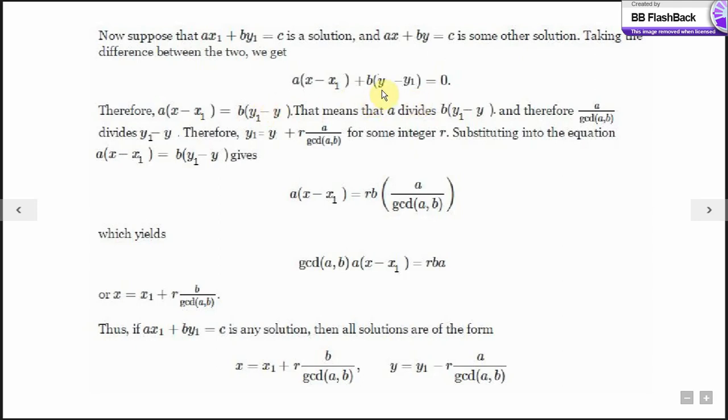Taking the b into y minus y1 on the other side, we get a into x minus x1 equals b into y1 minus y. That means that a divides b into y minus y1, and therefore we can say that a divided by the gcd of a, b divides y minus y1. Solving this equation, y1 gives y plus r into a by gcd of a, b for some integer r. Substituting this into the equation a into x minus x1 equal to b into y1 minus y gives us this, which yields x equal to x1 plus r into b by gcd of a, b.